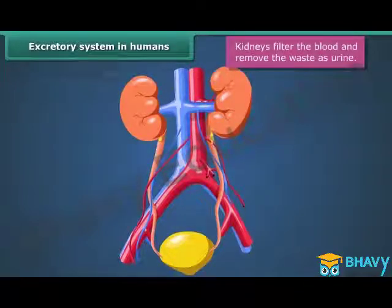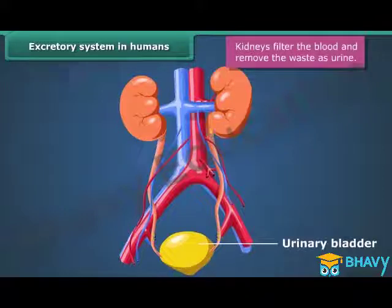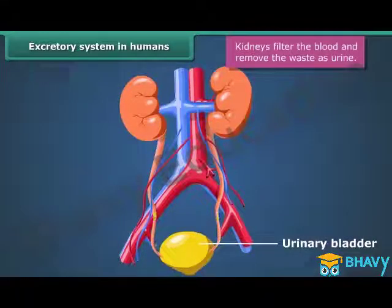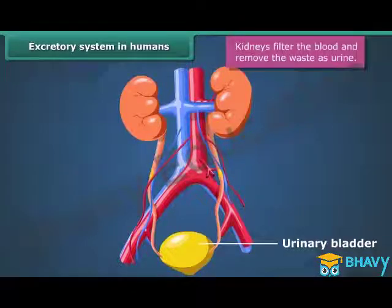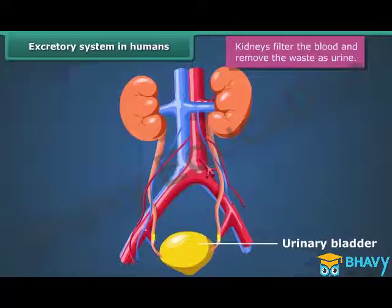The urine goes into the urinary bladder through tube-like ureters. It is stored in the urinary bladder and passed out through the urinary opening at the end of a muscular tube called the urethra.